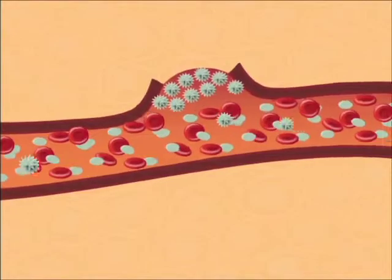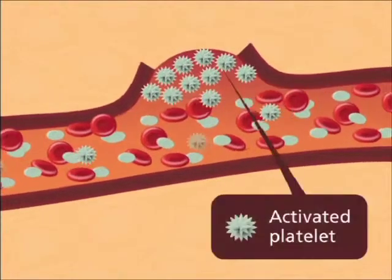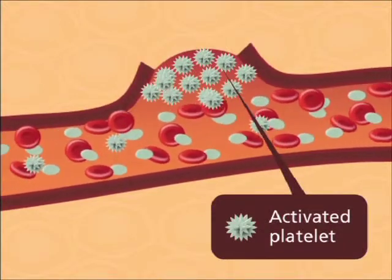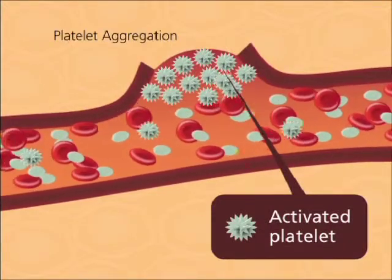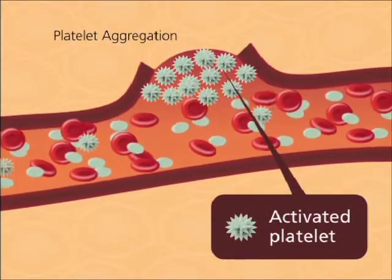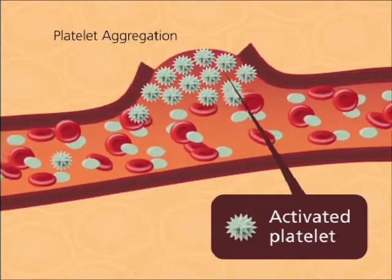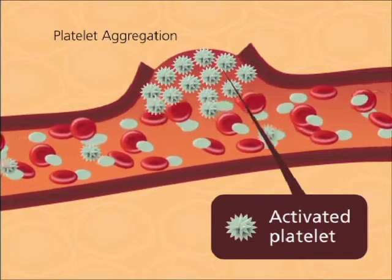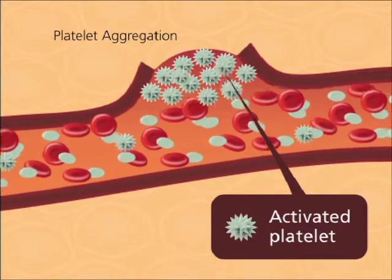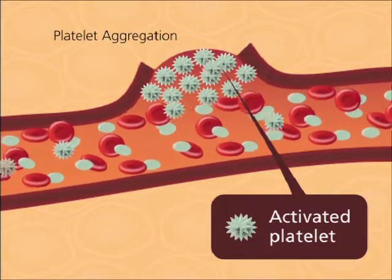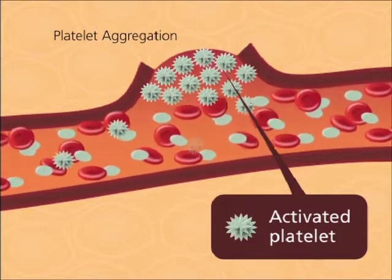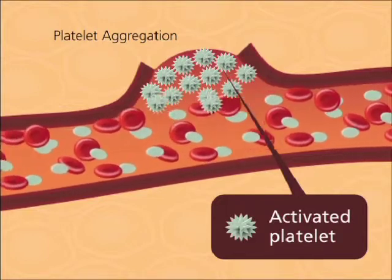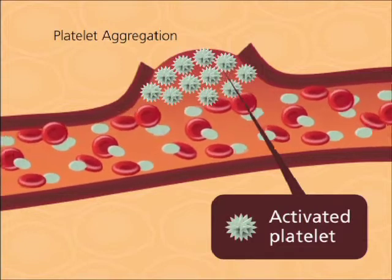Adherent platelets are activated and attract other platelets through a process known as platelet aggregation. Fibrinogen molecules form bridges between adjacent platelets. This forms an aggregate of platelets that occludes the wound and eventually stops bleeding.